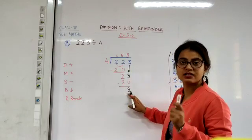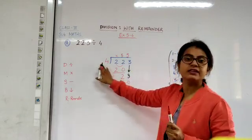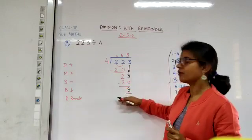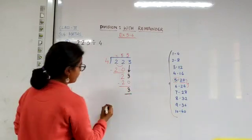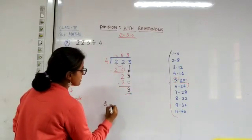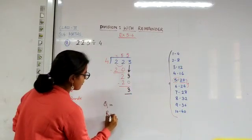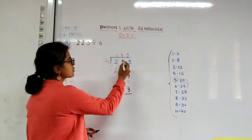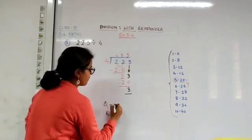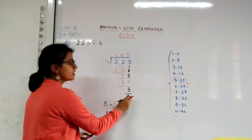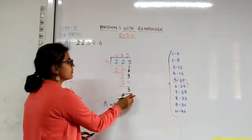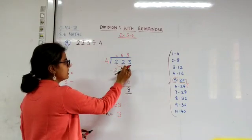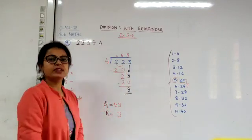So we can stop or we can end the division here. So in this question, children, we have obtained our quotient also our remainder. What is our quotient, children? 55. And what is the remainder? It is 3. This is the number which is left after dividing 223 by 4.